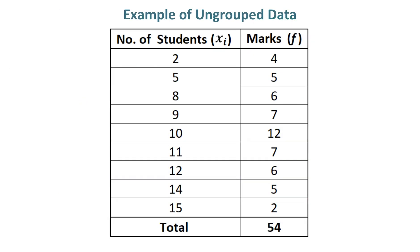Example of ungrouped data. Find the mean, mean deviation, standard deviation, and variance of the marks obtained by 54 students. The frequency is given in front of number of students, Xi, which becomes class marks or midpoints in ungrouped data.